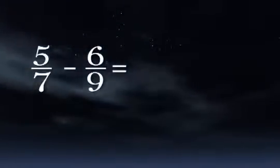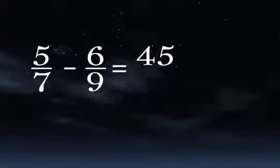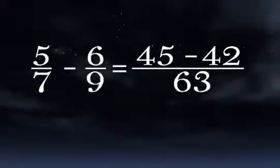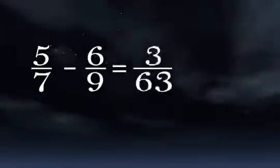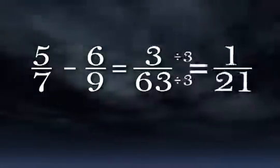That equals 45 minus 42 over 63, and that equals 3 over 63, which simplifies to 1 over 21.